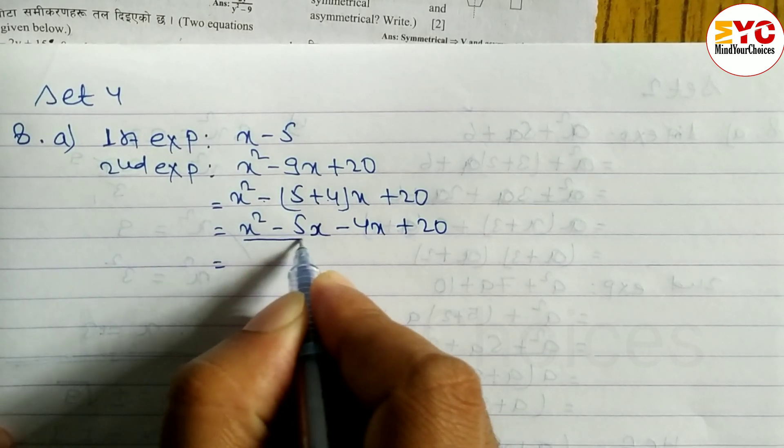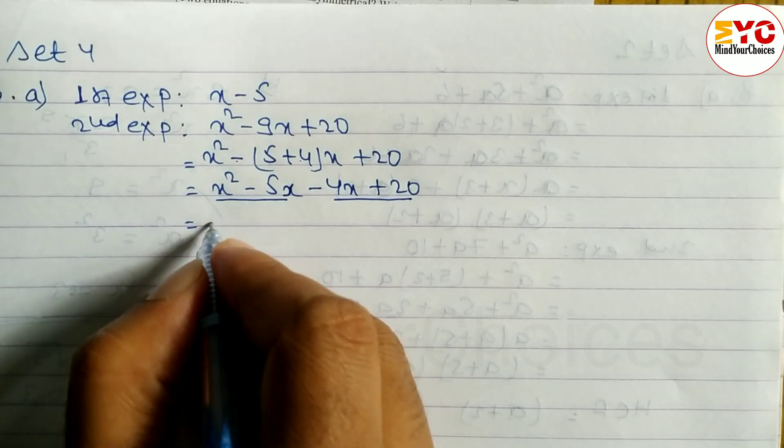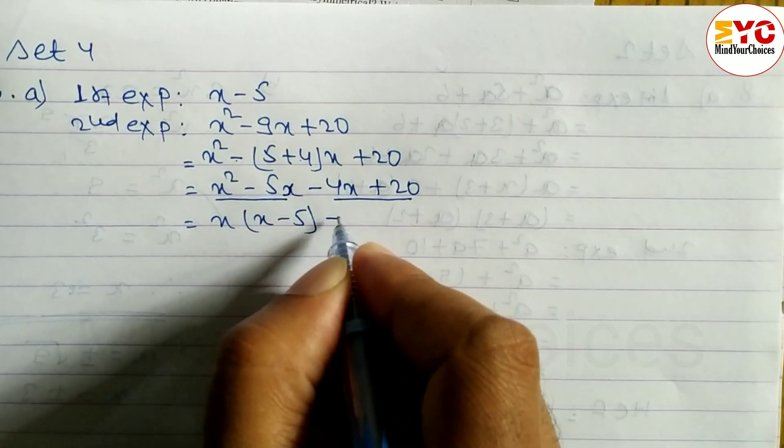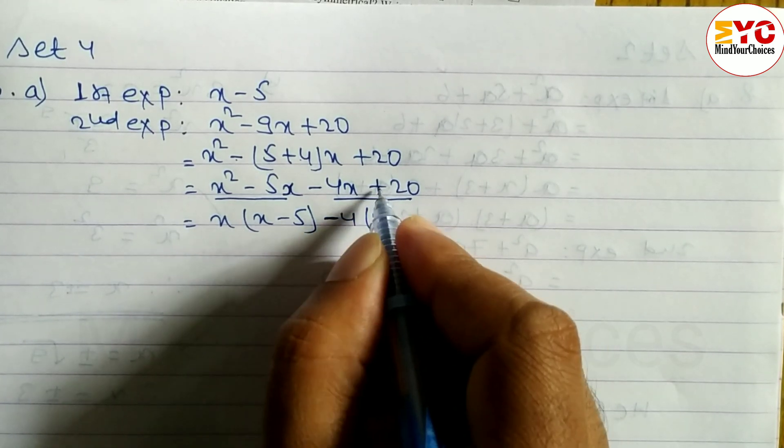Now, take common from first two terms, take common from last two terms. Now, x-square and x, x is common, remaining what is it? x-5. Minus 4, minus 4 common take, remaining x.